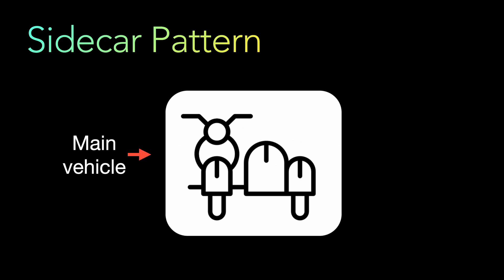The person driving the scooter is looking at the traffic, applying the brakes, doing all the main functionality. And then there is also a sidecar which is basically carrying another person.